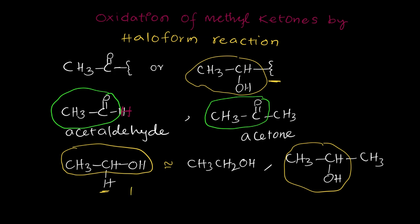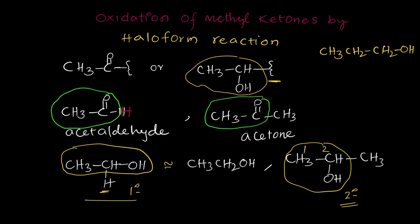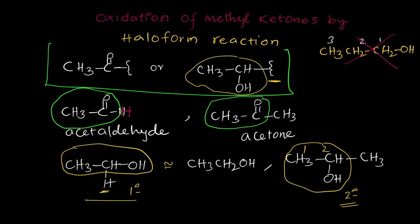This is the primary alcohol; this is the secondary alcohol. Keep in mind this is position number one, this is two. At the second position, a hydroxy group is required in the secondary alcohol. For primary alcohol, compulsorily only two carbons are required. For example, CH₃CH₂CH₂OH is a primary alcohol with three carbons, but it does not participate in the haloform reaction.